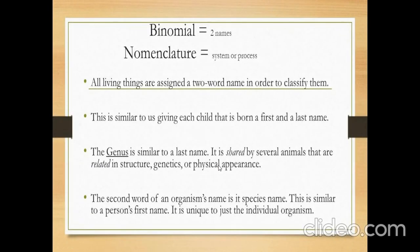Binomial means two names and nomenclature is a system and process. All living things are assigned this two-word naming system in order to classify them. This is similar to giving each child that is born a first and a last name. The genus is similar to the last name — it is shared by several animals that are related in structure, genetics, or physical appearance.